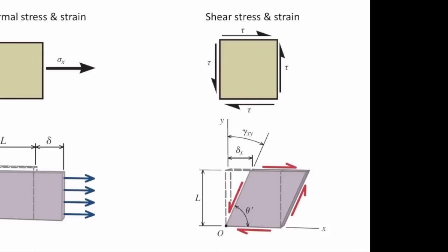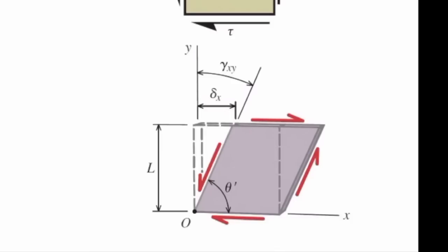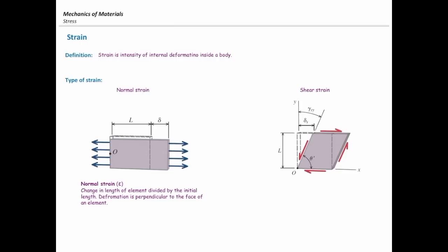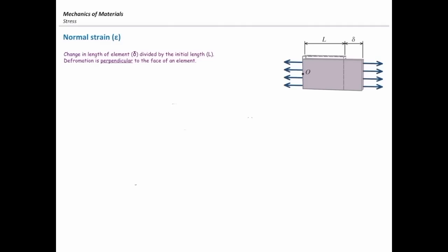This is the sort of deformation you should expect when you subject an element to shear stress. In this case, there is no change in the length — the change is in the angle. So we have two types of strains: normal strain and shear strain. In normal strain, we see elongation or contraction — deformation is perpendicular to the face. In shear strain, there is no change in length, only change in angle. I will focus on normal strain first, solve a problem, then discuss shear strain.